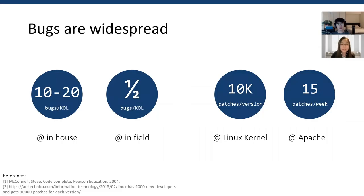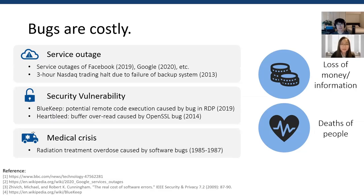To fix these bugs, patches are common in large systems. The Linux kernel gets more than 10,000 patches per version. Apache receives around 15 patches every week. Bugs are costly — they will cause service outage, security vulnerability, medical crisis, and so on. These typically cause a lot of money and information loss, or even deaths of people.